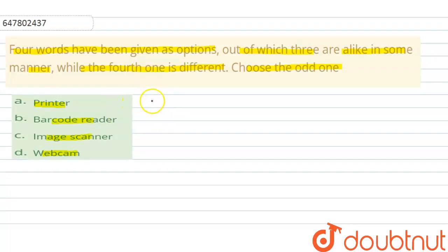As we can see, printer—option A—is what? An output device, right? It is an output device.